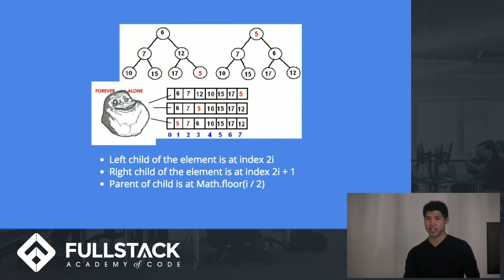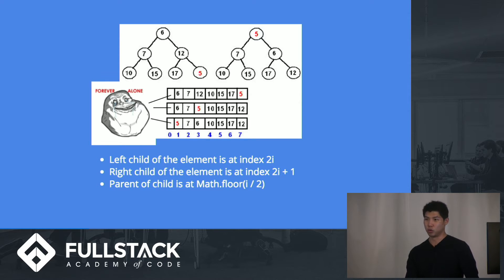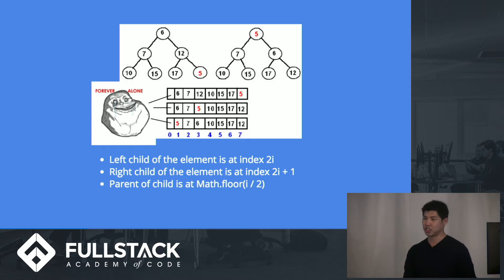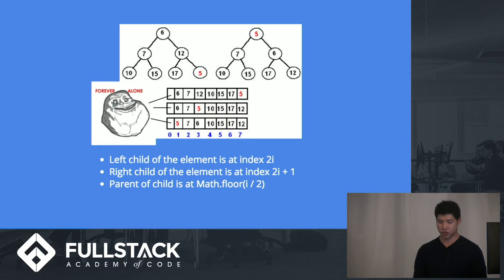This is what it would look like in an array. It makes things much easier to have the first index, index 0, be empty. So you put the maximum element at index 1. The left child of an element is at index 2 times i, and the right child is at 2 times i plus 1. So for index 1, the left child node is at index 2 and the right child is at index 3. And to get the parent index, all you do is integer division by 2.